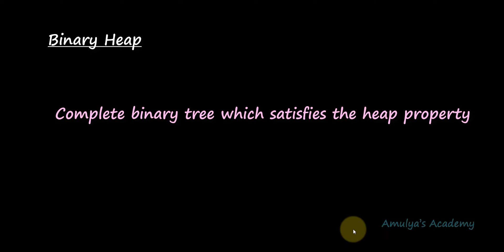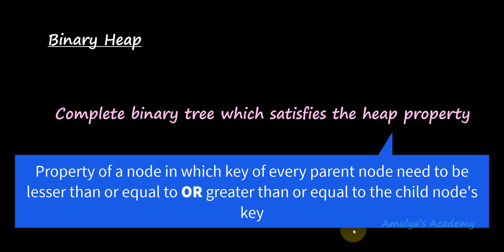Coming back to the definition: a binary heap needs to be a complete binary tree — that is the first part. The second part is it needs to satisfy the heap property. The heap property is a property of a node in which the key of each node is always greater than or equal to, or less than or equal to, its child nodes. So either the parent node key can be greater than or equal to the child node, or the parent node key can be less than or equal to the child node.